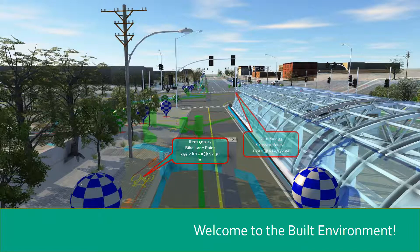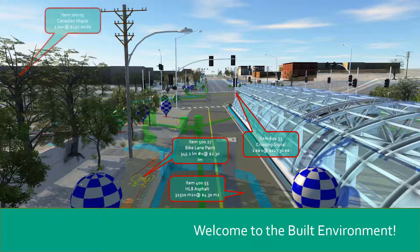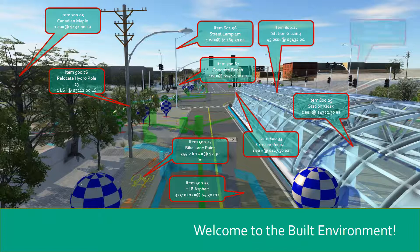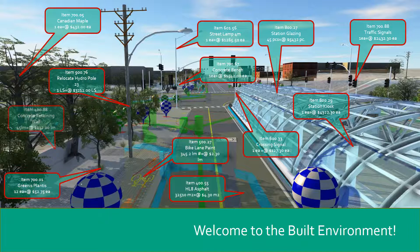When you look around at all the infrastructure being built today, every single thing that gets built — from water mains to trees — has been put on a list, quantified, estimated, bid out, awarded, inspected, and ultimately paid for. This process is called contract administration. Microsoft Excel has been the primary tool for engineers doing contract administration.